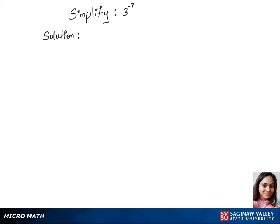To simplify 3 power minus 7, we'll use the negative rule of exponents. So let's write 3 power minus 7 according to the formula: 1 over 3 power 7. Now this gives us 1 over 2187 — that's our answer.